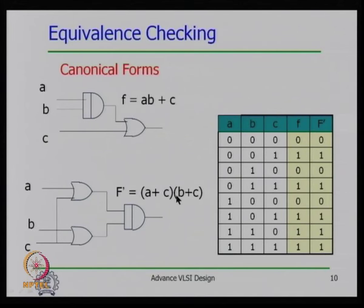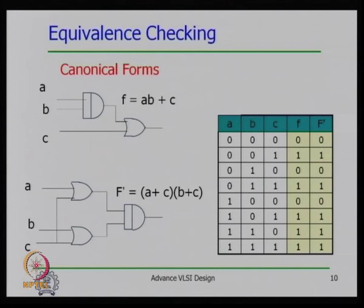We need some way that provides a unique representation of the circuit. If both functions are equivalent, their unique representation must be the same and we can compare that. The truth table is unique but not compact or manageable, so we want a representation that is compact and easy to manipulate.